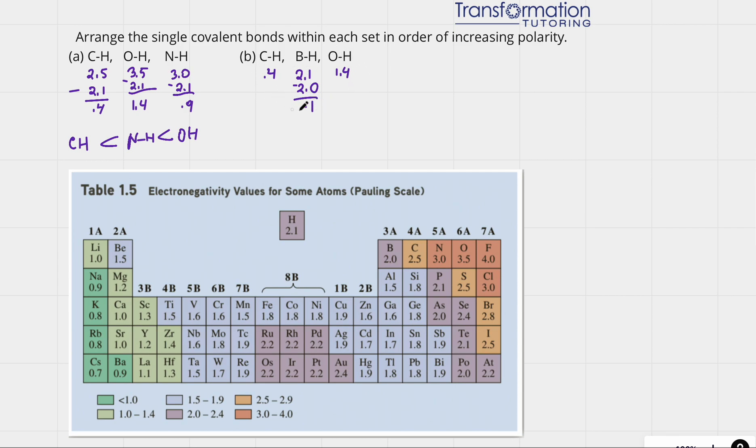Who has the highest electronegativity difference? OH, which means that it's going to have the most polar bond. Next is CH. And the least polar will be BH.